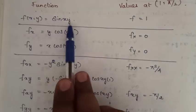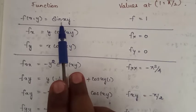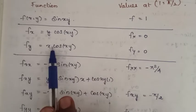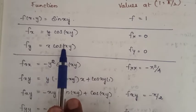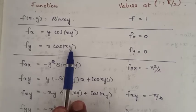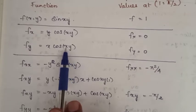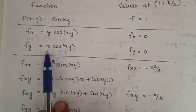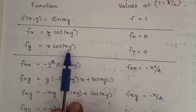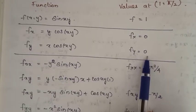Next, differentiate f(x,y) = sin(xy) with respect to y to get fy. Differentiating sin(xy) gives cos(xy), then differentiating xy with respect to y gives x. So fy = x·cos(xy). Substituting x = 1, y = π/2, we get fy(a, b) = 0.